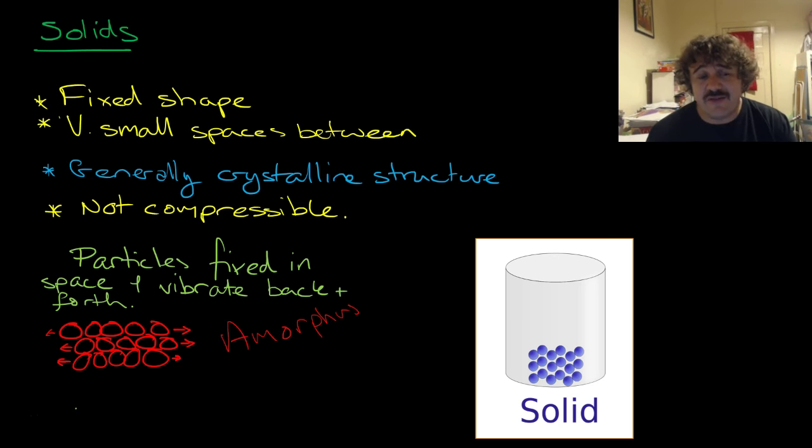And the particles, and this is cool about their movement, the particles are fixed in space and they vibrate back and forth against each other. So it looks a bit like this. They're just sort of here chilling out, stuck together. They just vibrate and move against each other. And you can see here it's got a regular shape or a fixed shape and so forth.